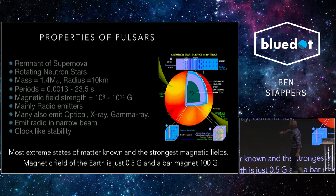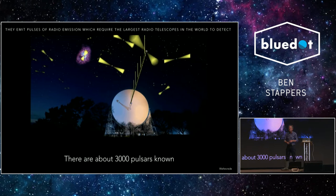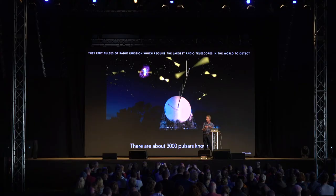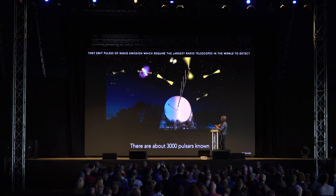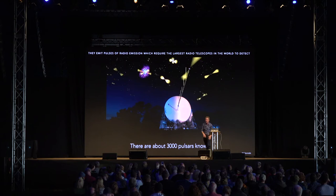Pulsars - the slowest spinning is around about once every 23 seconds, the fastest is 1.3 milliseconds, so it spins around in 1.3 milliseconds. At Jodrell Bank we do these pulsar timings. There are around about 3,000 pulsars that are known, and we monitor those pulsars at Jodrell Bank, as many of them as we possibly can. You can see the pulses arriving at the telescope, and as I mentioned, you can think of these pulsars as being like cosmic clocks.